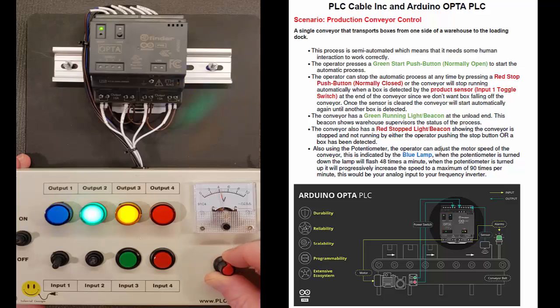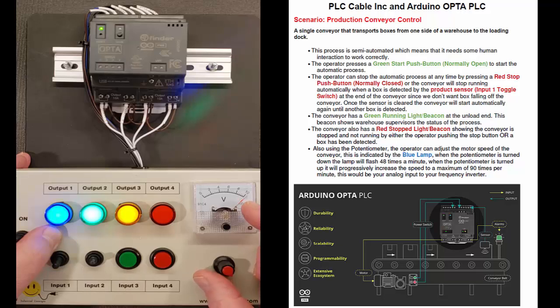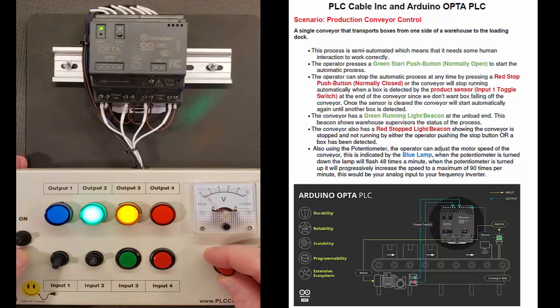The faster we go, the faster the motor is running. So this is going to be max speed which would be 10 volts going to our inverter or currently going to the PLC. And then we can slow it down to zero volts which would be the minimum speed that the conveyor will run.